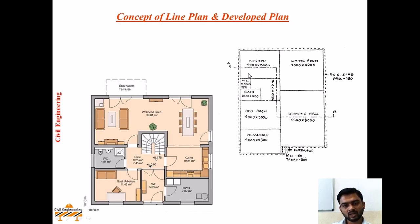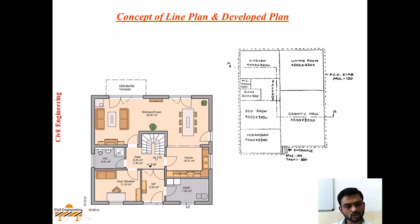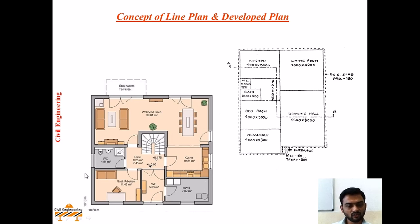In short, in line plan wall thicknesses are not considered and openings may or may not be provided. Whereas in developed plan, all the openings such as doors, windows, and ventilators are shown, and wall thicknesses - both external and internal - are considered. This development is most important and required during the sanctioning of the plan, and this plan is to be given with various details and requirements to the plan sanctioning authority prior to construction activity.